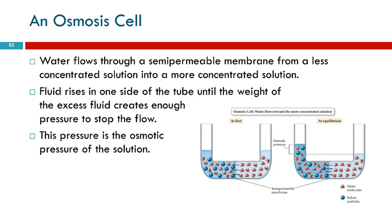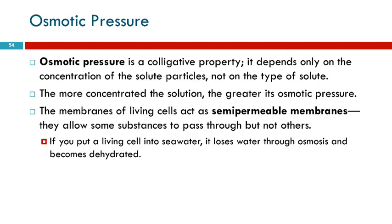You've probably heard of reverse osmosis water purification systems. In reverse osmosis, instead of pure water moving into the dirty water, you apply a lot of pressure to force the water through the membrane, leaving all of the solute — the contaminants — behind. Osmotic pressure is a colligative property: it only depends on how many solute particles there are, not what kind they are. The greater the concentration, the greater the osmotic pressure.